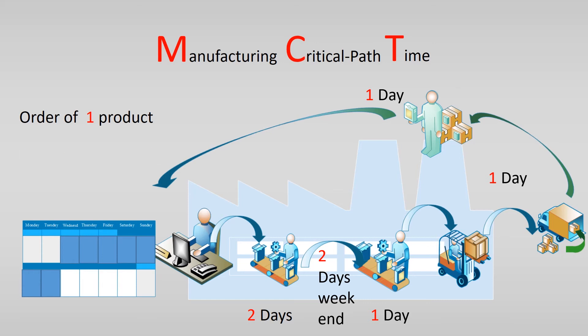Adding all the days up, it is seven calendar days of elapsed time from when the customer orders the product until the moment the customer receives it. As you can see, this is not the time actually worked on the product. In a later video you can learn the difference between the time a product is actually being processed and the time it lays still and is not touched.